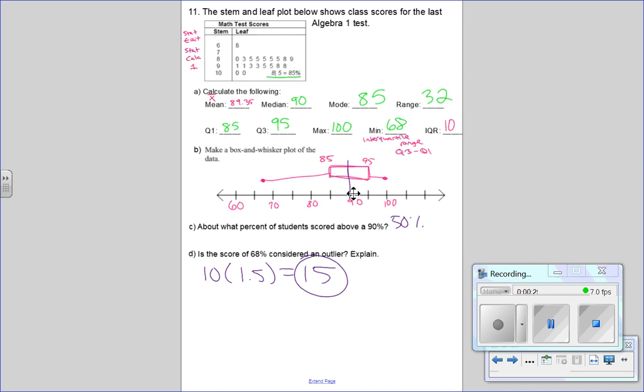And then you basically say, is 68 more than 15 units below the box? Is it more than 15 units away from Q1? So, let's look. The box, the lowest point in the box is 85. 85 minus 15 would be 70. So, anything below 70 would be an outlier.